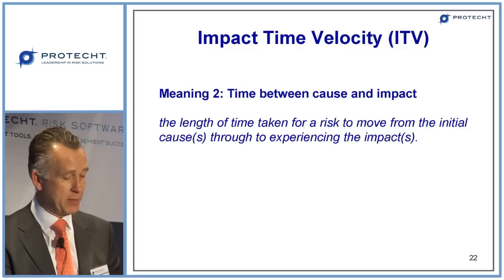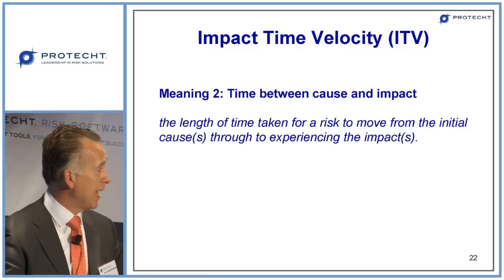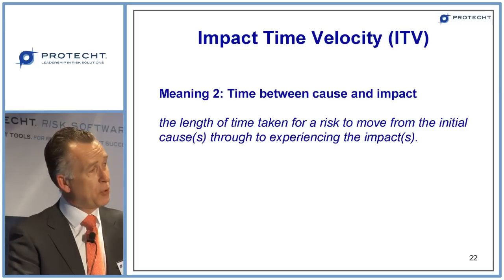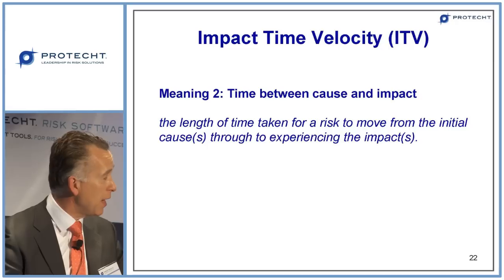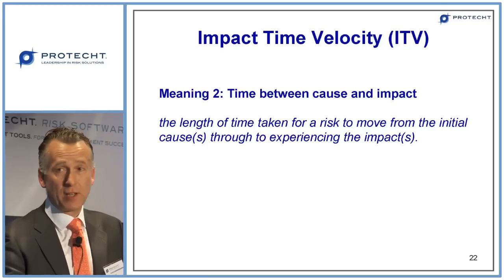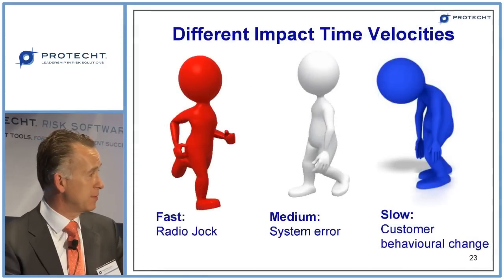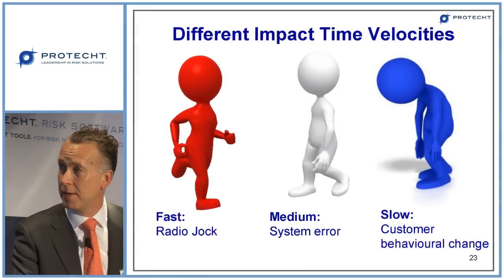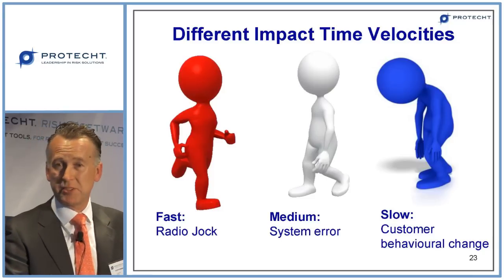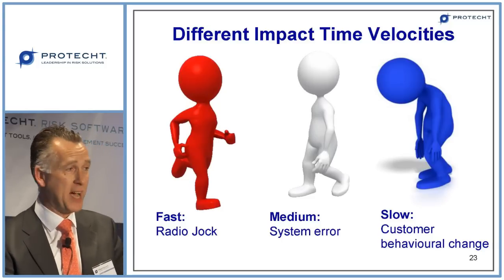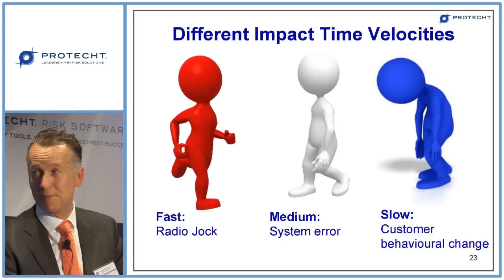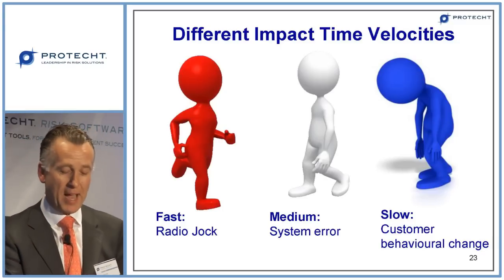Now some of you may be familiar with bow tie analysis, which takes the risk from its cause all the way through events to its impact. In terms of a slow velocity risk it unfolds slowly — that would be the customer behavioural change risk. A fast velocity risk, like the Carl Sandilands risk, develops at speed. Three types to consider: fast velocity such as the radio jock, medium velocity such as a system error which may unfold within a day or two, and slow velocity such as customer behavioural risk.